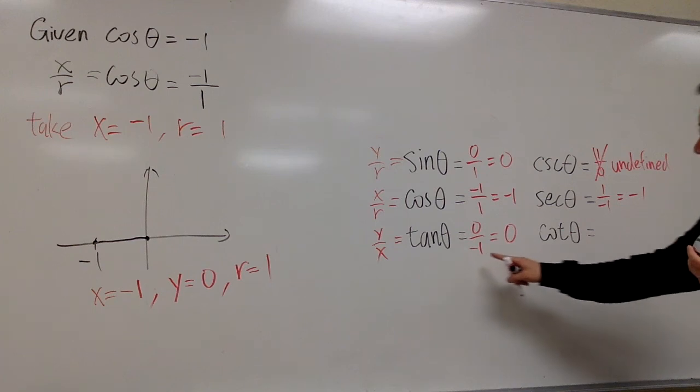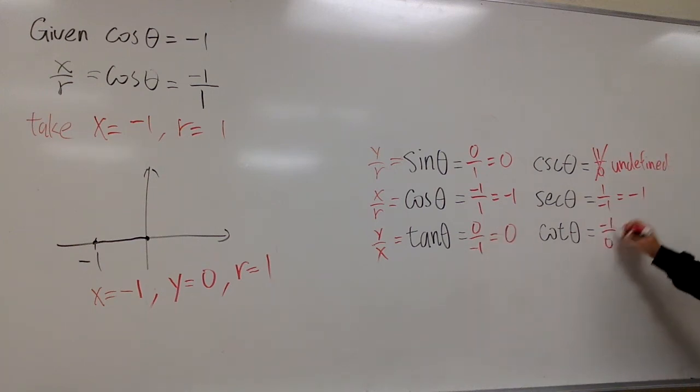Cotangent theta, it will be negative 1 over 0. Well, this is also bad, because we have the 0 in the denominator. So I put down undefined. And this is it. See you next time.